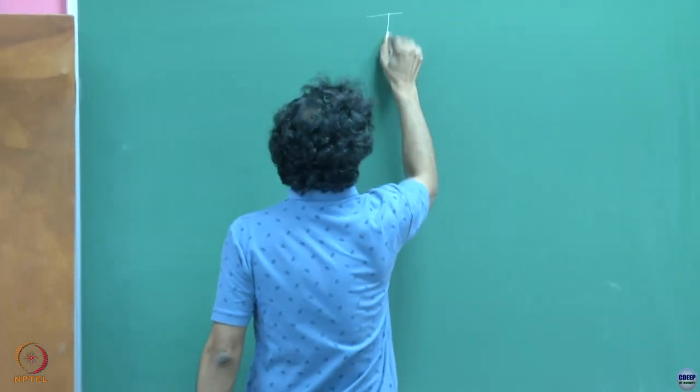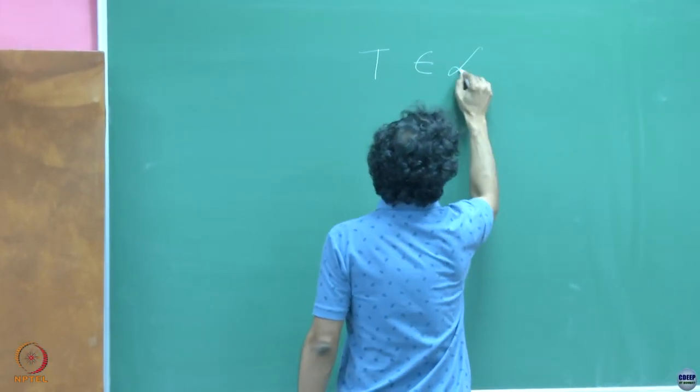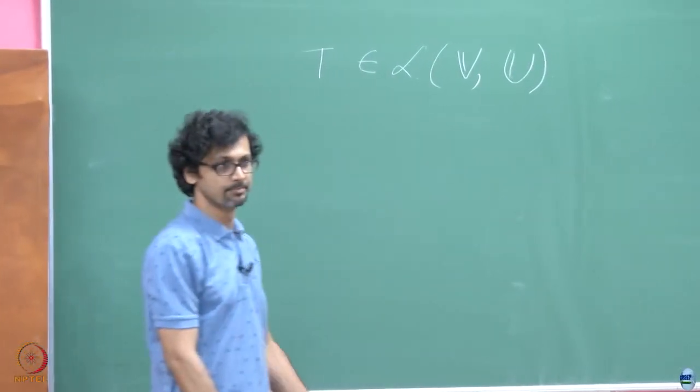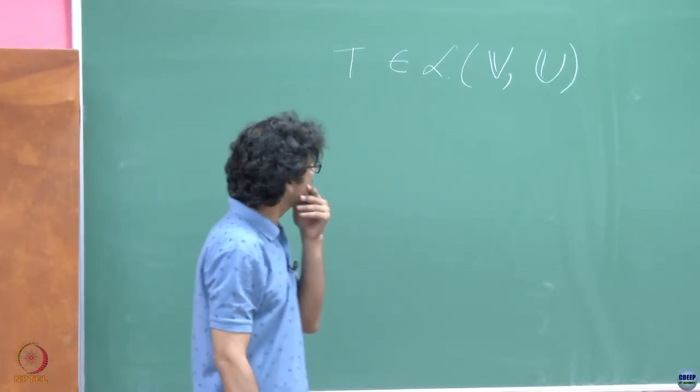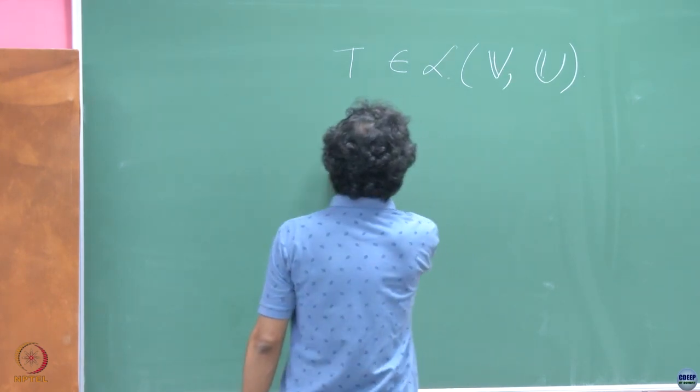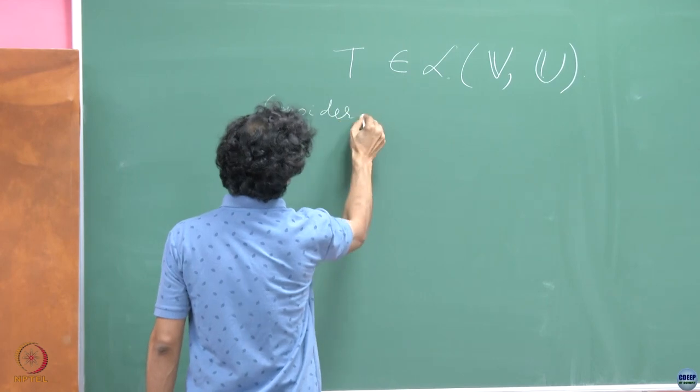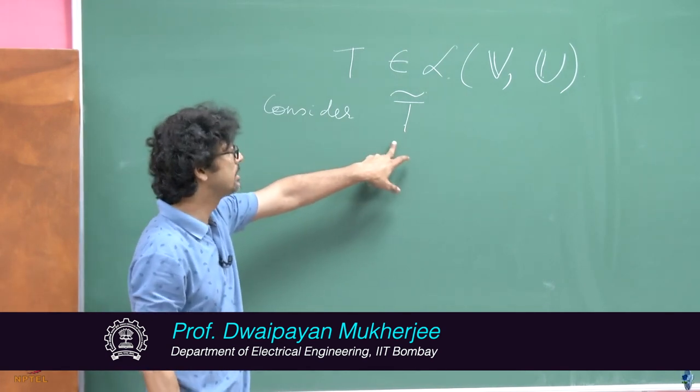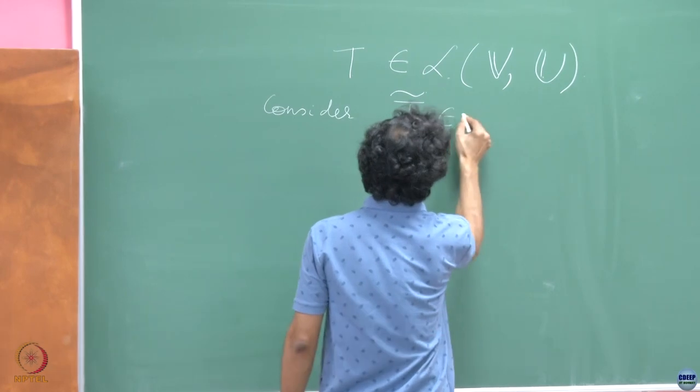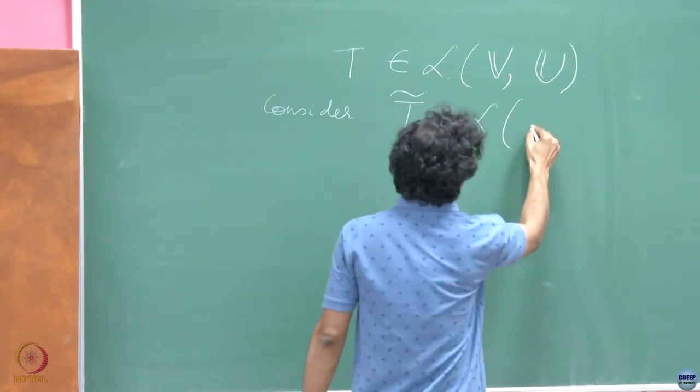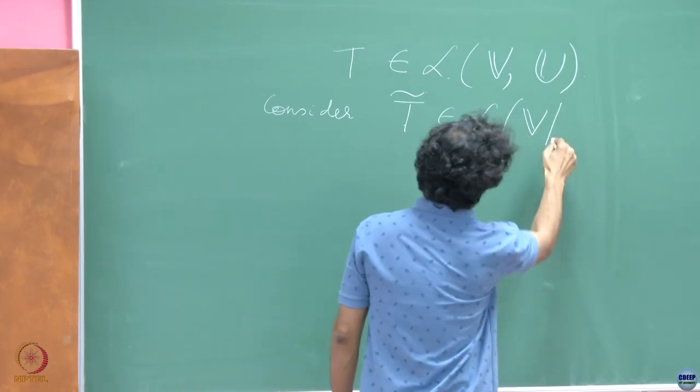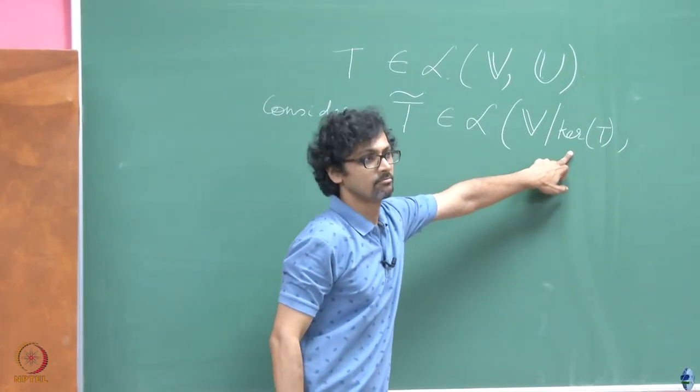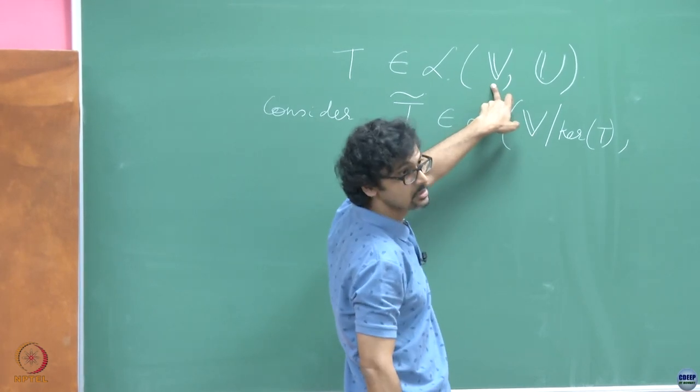Let us consider a linear transformation from a vector space V to a vector space U, and consider a related, not the same, but a related map only the difference being that this one is a mapping from this vector space which obviously looks nothing like this vector space.